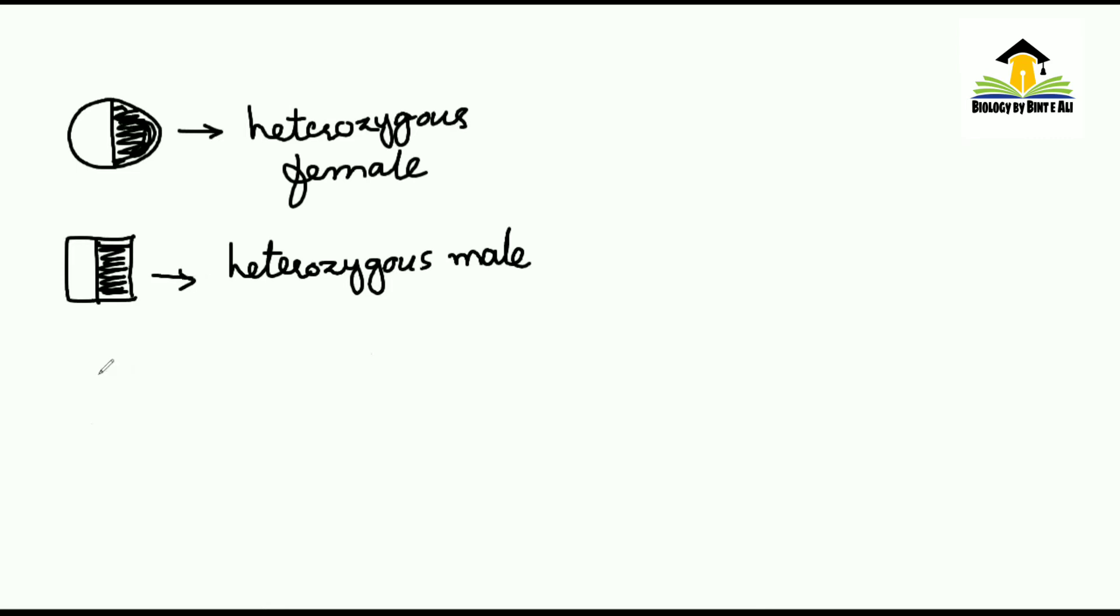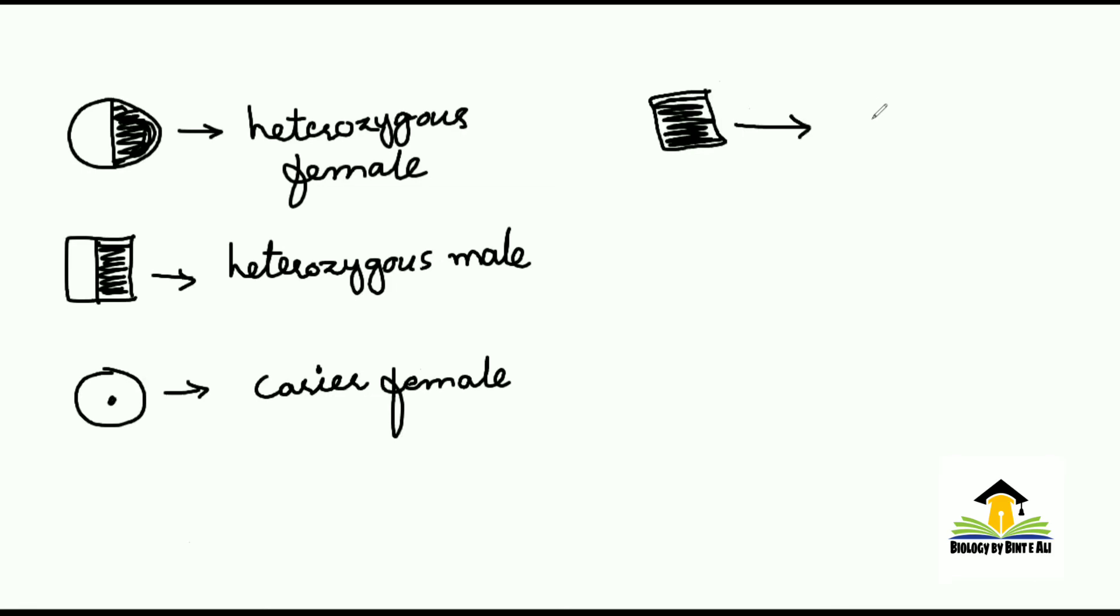And if the circle is dotted in the center, then we call it carrier female, because male is not a carrier. And if the square is completely black or colored, then it will be affected male. Or if the circle is black, then it will be affected female.